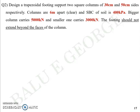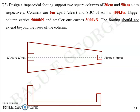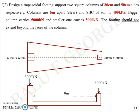The footing should not exceed beyond the faces of the columns. So you have a trapezoidal combined footing with dimensions currently unknown. There are two columns — one on the left side with 50cm dimensions and one on the right with 30x30cm. One carries 5000kN and the lighter one carries 3000kN. The sectional elevation shows a clear spacing of 6m, meaning from one face to the face of the other column it is 6m.